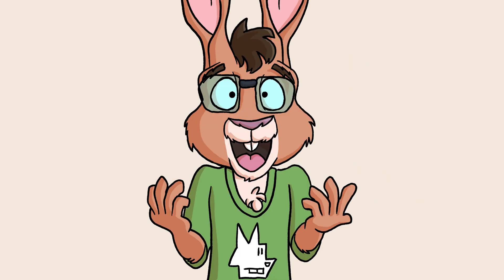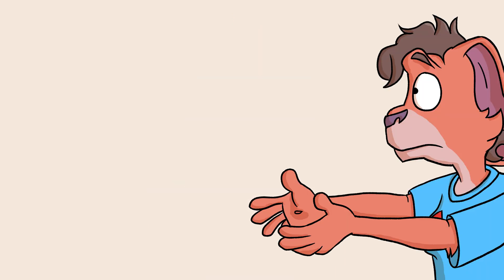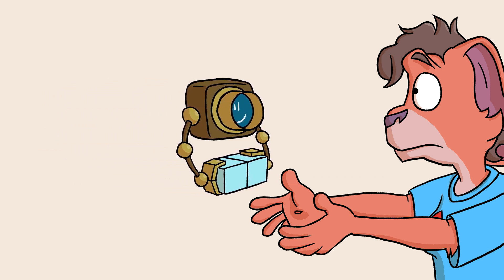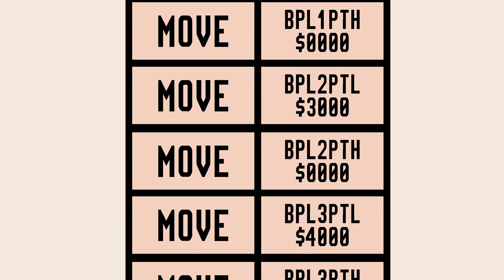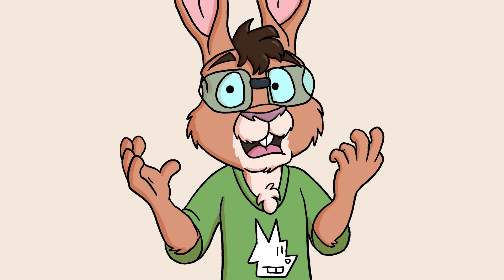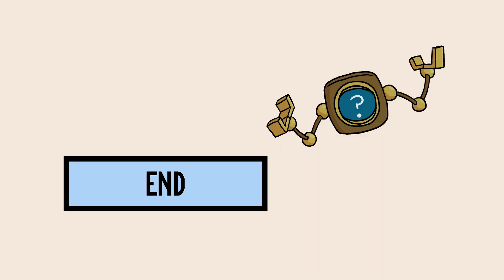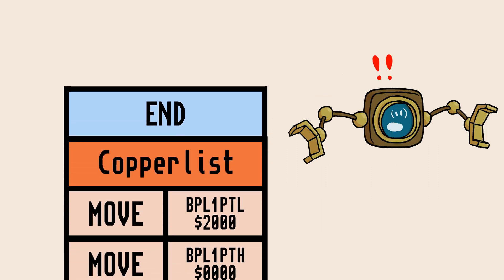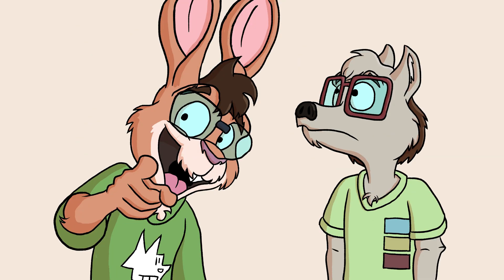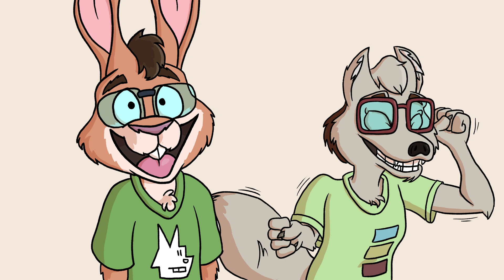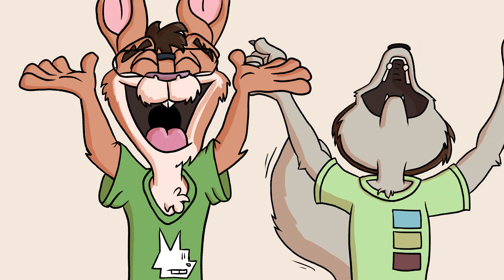The first thing we can get the copper to do is set up the pointers to the bit planes. We need to get this data to Agnes ASAP, so we don't wait for the electron gun to be anywhere. We place the MOVE instructions necessary to populate those bit plane registers right at the start of the copper list. Then we place a special WAIT instruction that marks the end of the copper list, describing an impossible electron gun location for the copper to watch for. It'll wait until the next vertical blank, at which point the process starts over again. This gets the frame rendering engine we've built running. But I know why you're really here — copper bars!